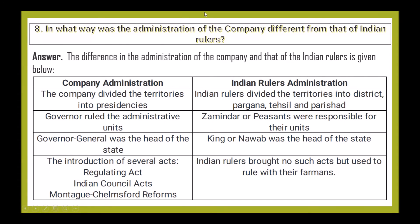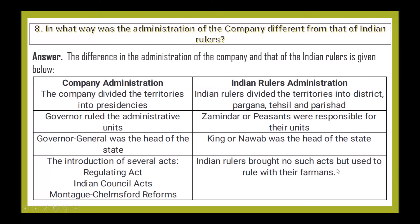Next question: In what ways was the administration of the company different from that of Indian rulers? Company administration: the company divided territories into presidencies; the Governor ruled the administrative unit; the Governor-General was the head of state; and several acts like the Regulating Act, Indian Councils Act, and Montague-Chelmsford Reforms were introduced. Indian ruler administration: territory was divided into districts and parganas; zamindars or peasants were responsible for their units; the king or Nawab was the head of state; and Indian rulers brought no such acts, ruling with customary practices.